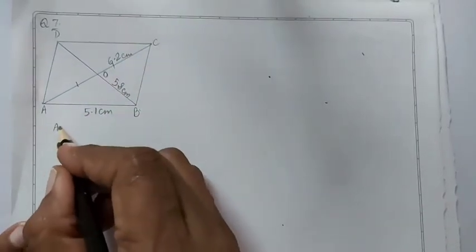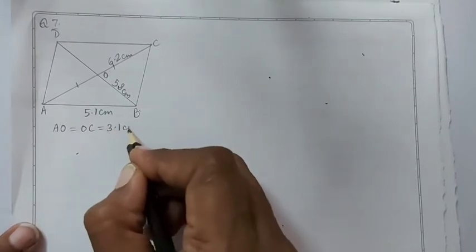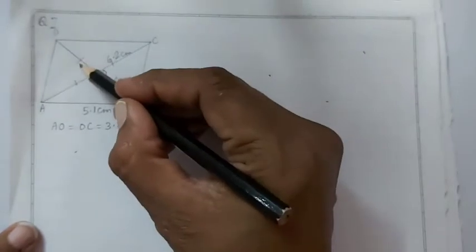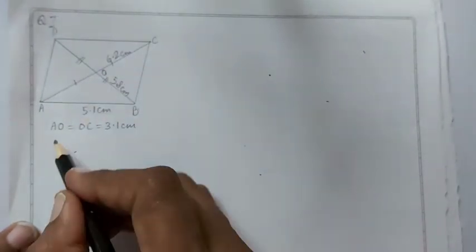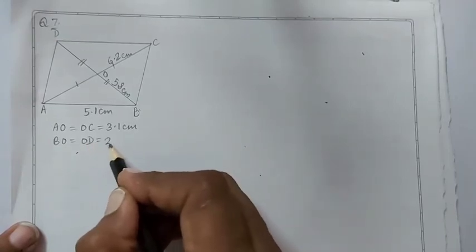So AO equal to OC which is half of 6.2 cm and BO equal to OD half of 5.8 cm, that is 2.9 cm.